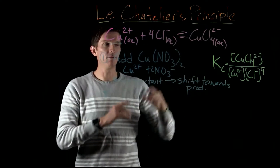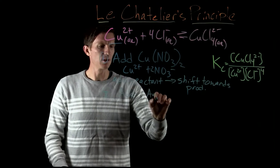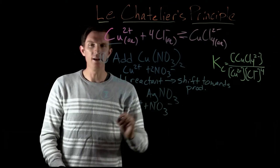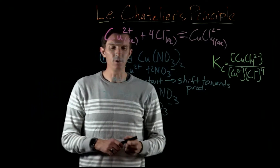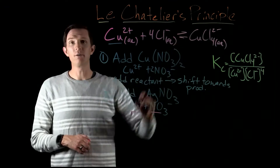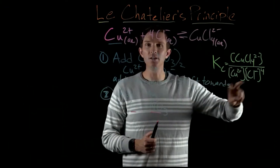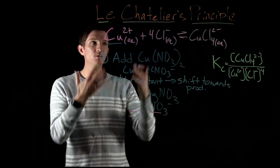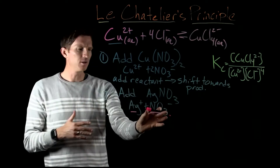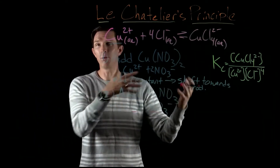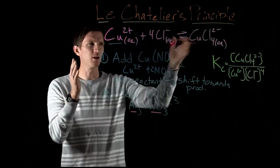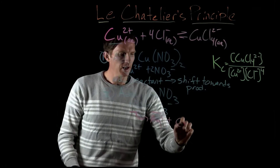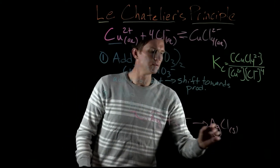What if instead of adding something directly in our reaction, we add something like silver nitrate? Silver nitrate is soluble, giving us silver and nitrate ions. Nitrate doesn't react with anything in our equilibrium — it's always soluble, not an acid or base. But silver reacts with chloride ions to give us something insoluble: solid silver chloride precipitate.